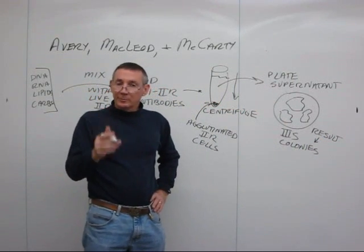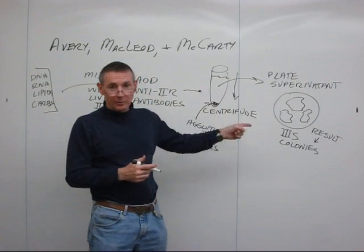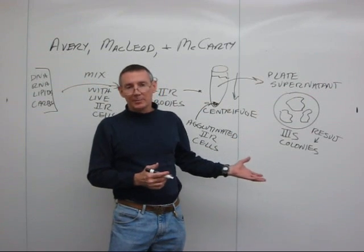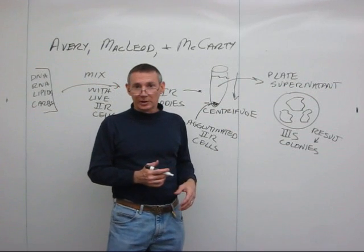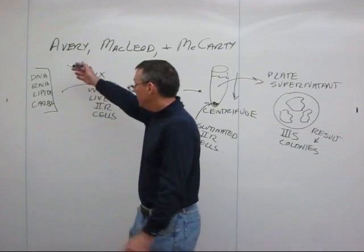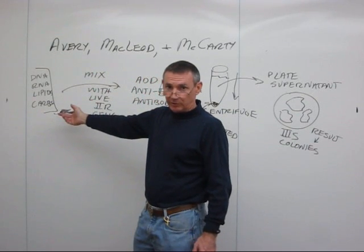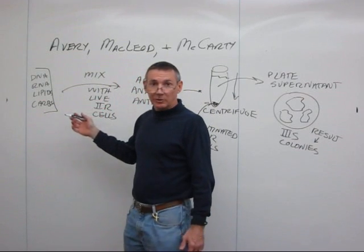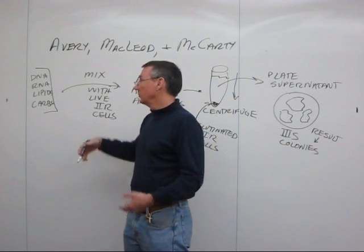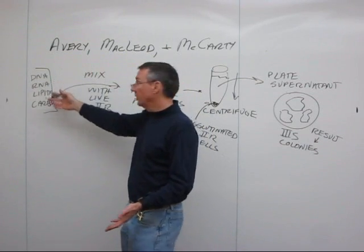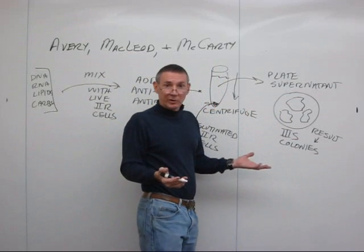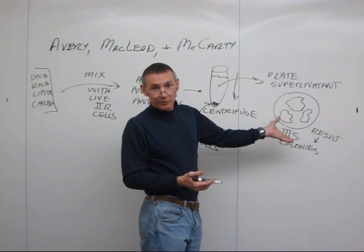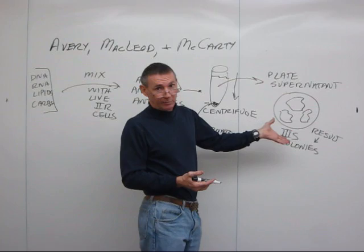This extract had been treated with protease, so it contained everything from the heat-killed 3S cells except the protein. If protein is the genetic material, we'd expect no colonies — the protein has been removed, there should be no transformation. In fact, when they did this, they got big, slimy 3S colonies. The hypothesis that protein was the genetic material predicted no colonies; they actually got colonies. Therefore, this result falsifies the hypothesis that protein is the genetic material. On the other hand, it supports the hypothesis that DNA is the genetic material, since DNA was still present.